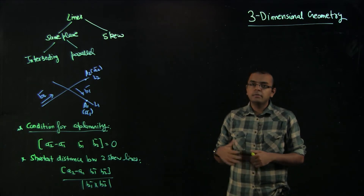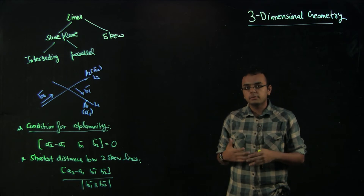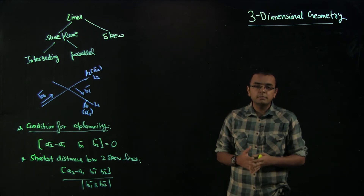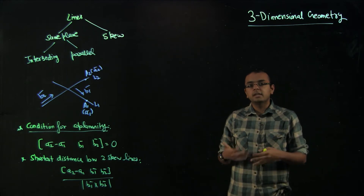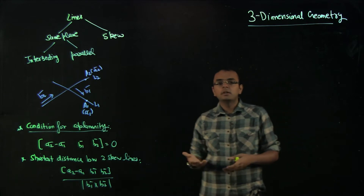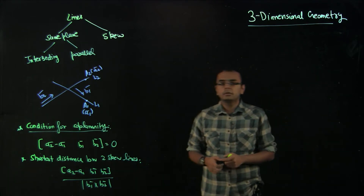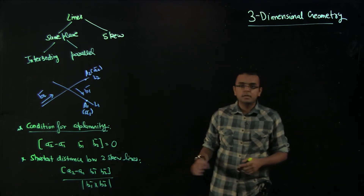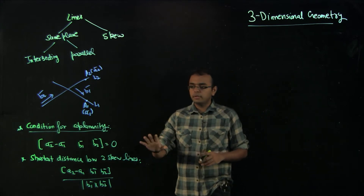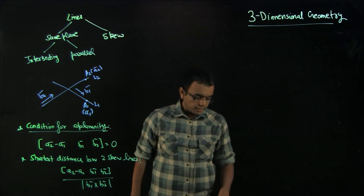I will also talk about the shortest distance between two parallel lines. However, I will not be solving an example because that is essentially the same as finding the distance of a point from a line, which we have already done in the last video. Let me start by first solving a question for the condition of coplanarity.